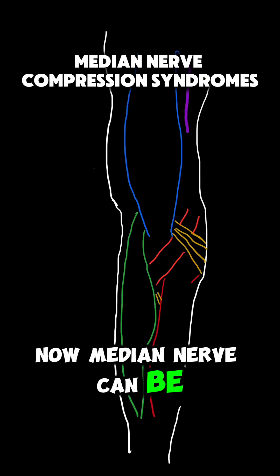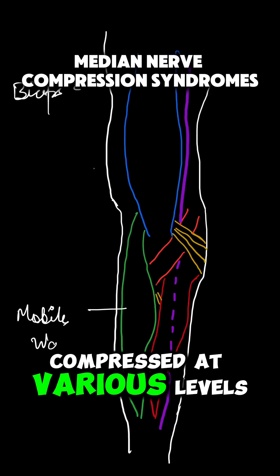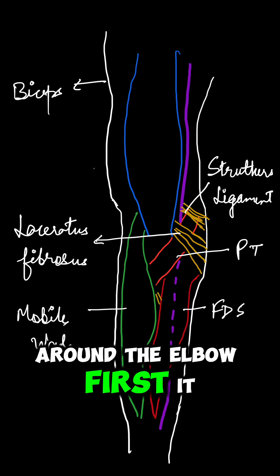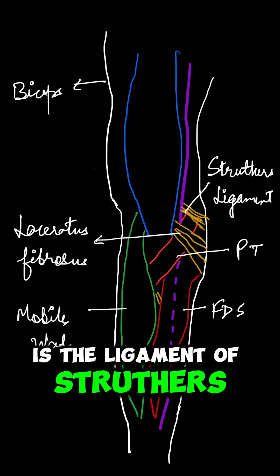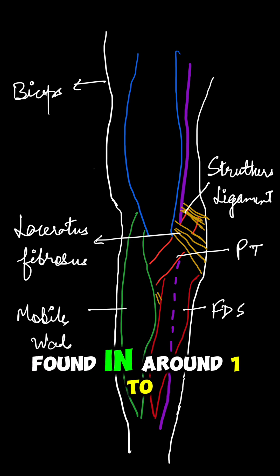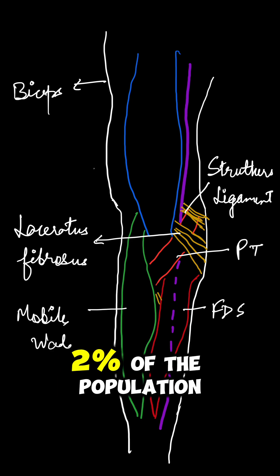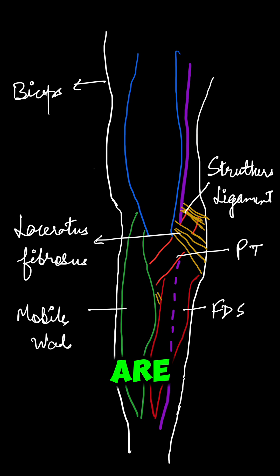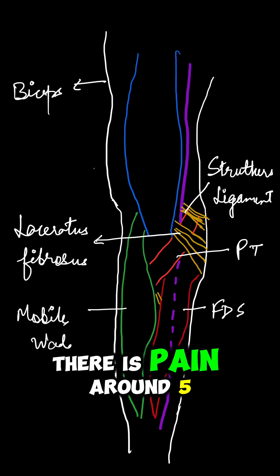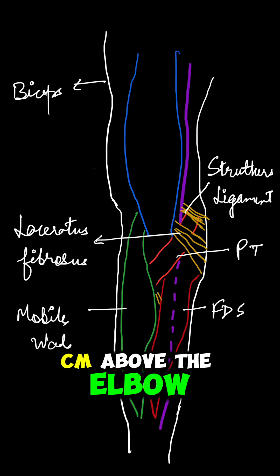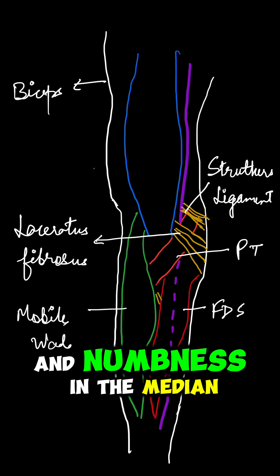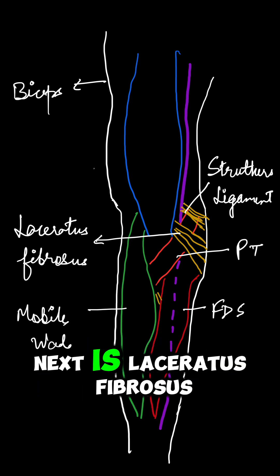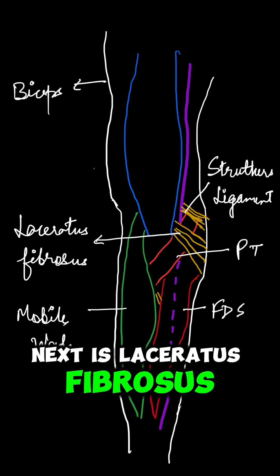Median nerve can be compressed at various levels around the elbow. First is the ligament of Struthers. It is a rare ligament found in around 1 to 2% of the population. The symptoms are pain around 5 cm above the elbow, and there is tenderness and numbness in the median nerve distribution.